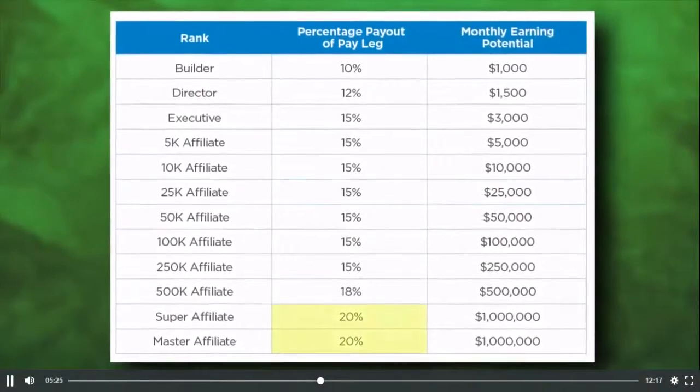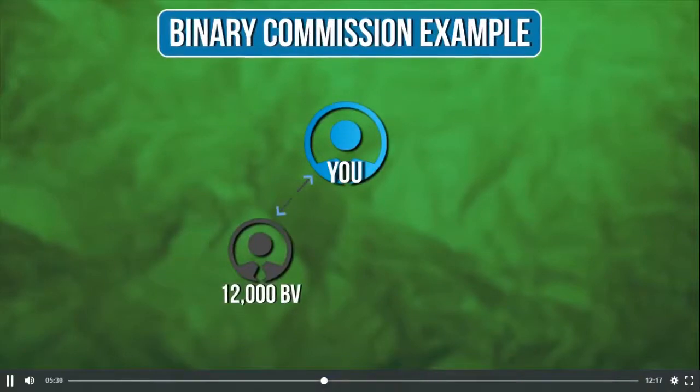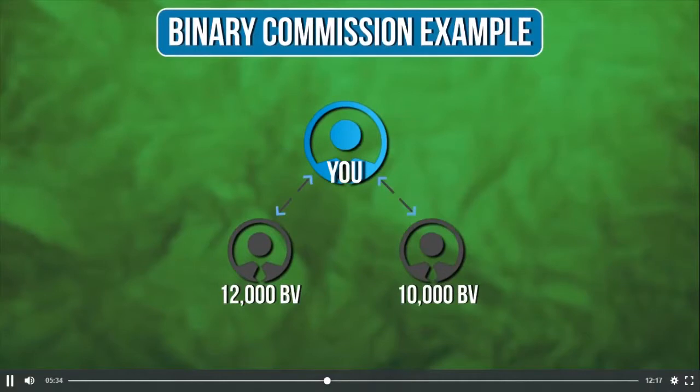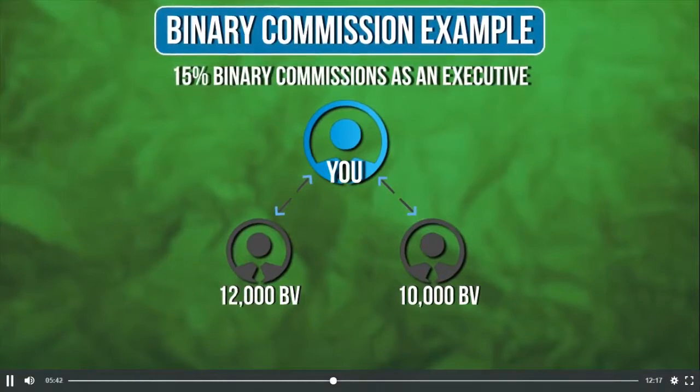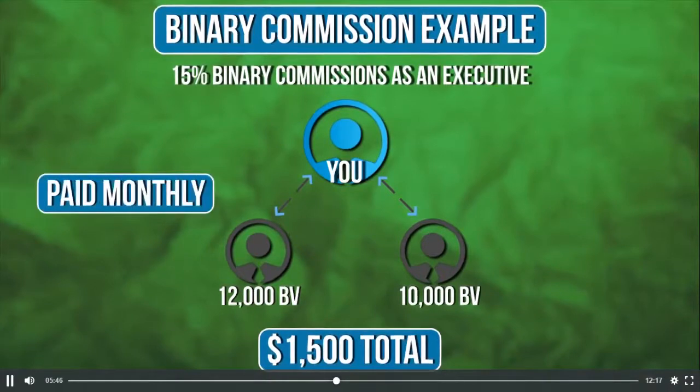Binary commissions: as your preferred customers and affiliates reorder MyDailyChoice products, it creates business volume which gets paid out in the binary. To qualify, you need 40 personal volume — from retail customers or personal purchases — and 90 business volume with personally enrolled volume on each leg. There must also be a minimum of 300 business volume in the lesser leg. The binary pays up to 20% on your lesser leg. For example, if you had 12,000 volume on your left leg and 10,000 on your right leg as an executive, you'd earn 15% of 10,000 — that's $1,500. Binary commissions are paid monthly, and any unused volume rolls over to the following month.